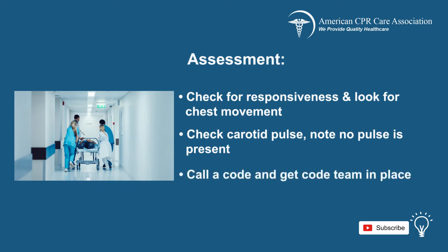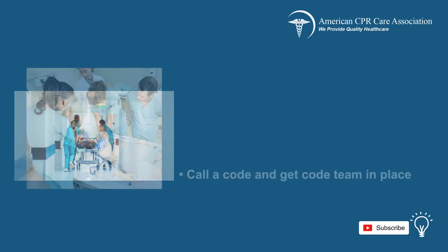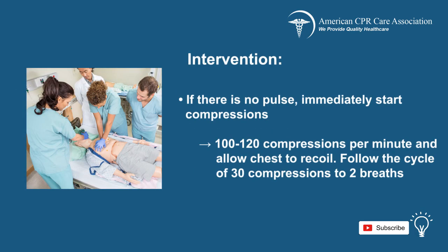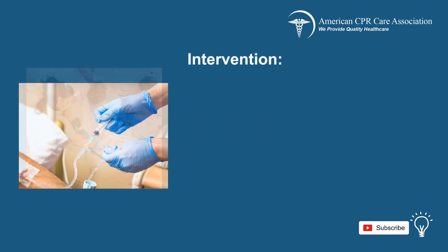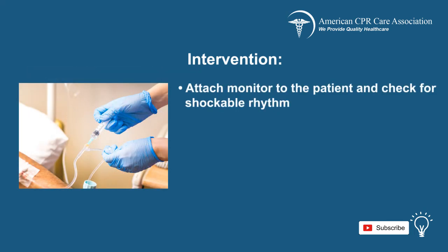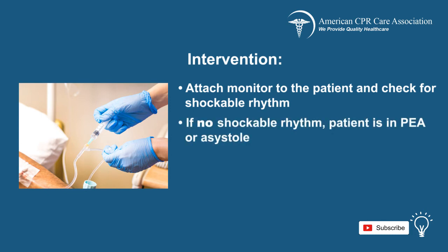Call a code and get the code team in place, then start with interventions. If the patient has no pulse, immediately start compressions at a rate of 100 compressions per minute and allow the chest to fully recoil, following the cycle of 30 compressions to two breaths. Once the code team is in place, one person will be responsible for compressions and one for breaths using a bag valve mask or BVM. Attach a monitor to the patient and check for shockable rhythm. If no shockable rhythm is present, the patient is in PEA or asystole.